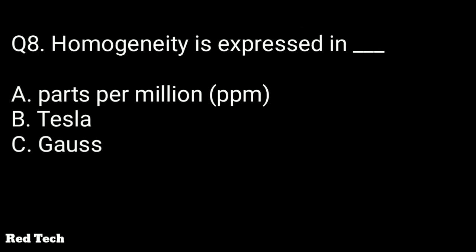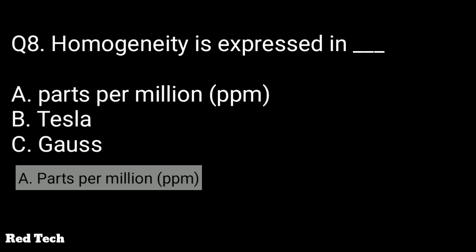Question number eight: MRI homogeneity is expressed in — the options are parts per million, tesla, or gauss. The right answer is parts per million. Tesla is the unit of magnetic field strength and is the bigger unit, while gauss is the smaller one.